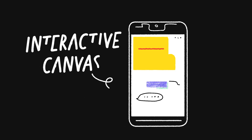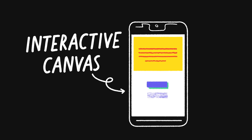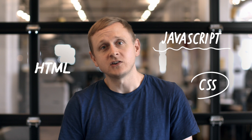But now there's a new feature for developers called Interactive Canvas. It lets you take over the whole screen and add custom graphics, UIs, and more to your action. That means you can build a full-featured app for the Assistant that does just about anything. If you can make a web page, you can make an action with Canvas.